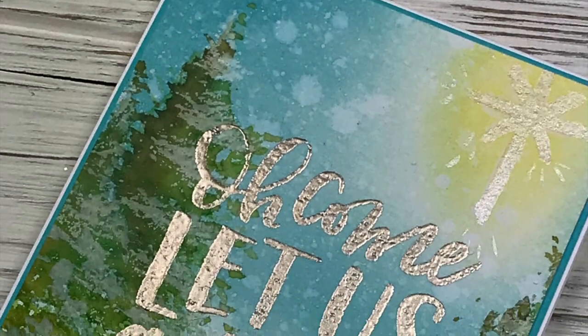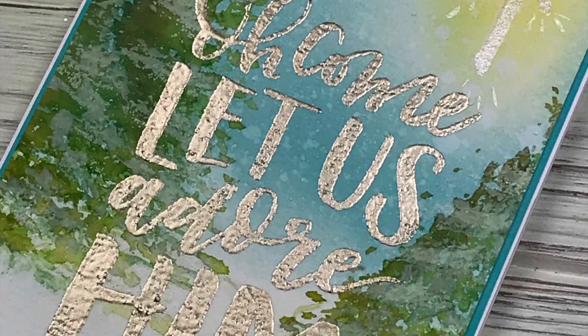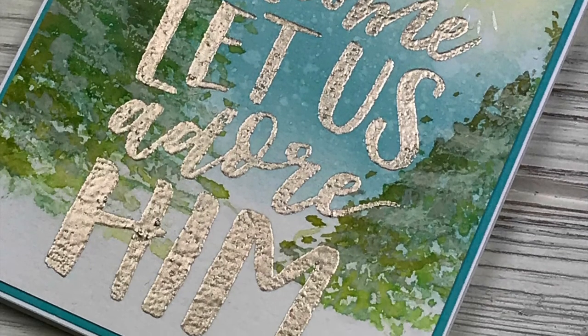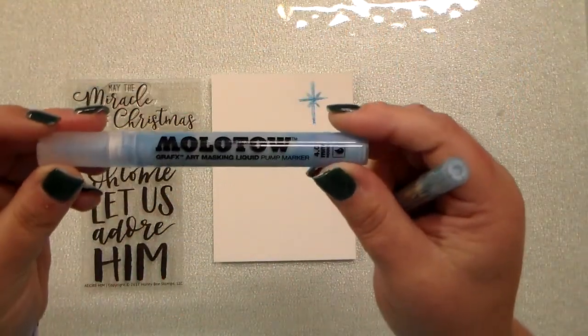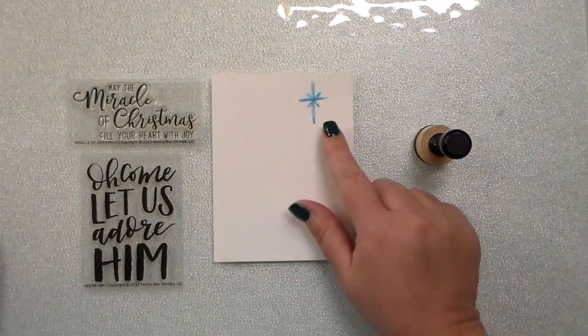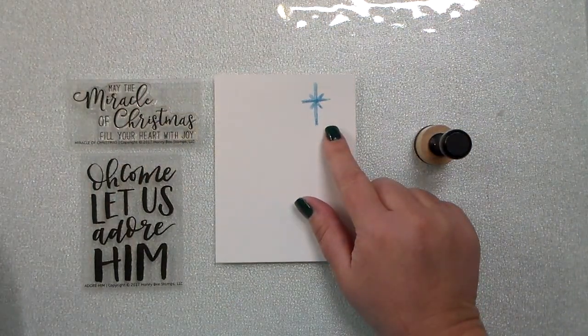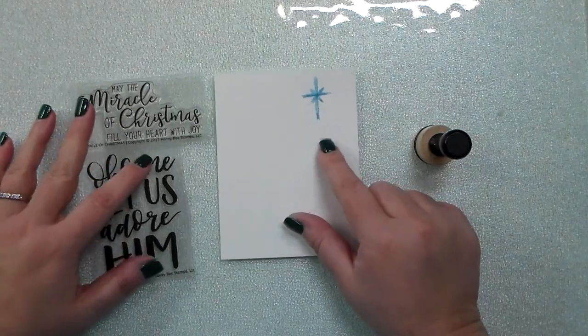Hey everyone, it's Kelly Kahoot and I am back with one more Christmas card for Honeybee Stamps. I was so excited to use this 'Oh Come Let Us Adore Him' huge stamp that covers the whole front of your card, but I wanted to do a winter scene.